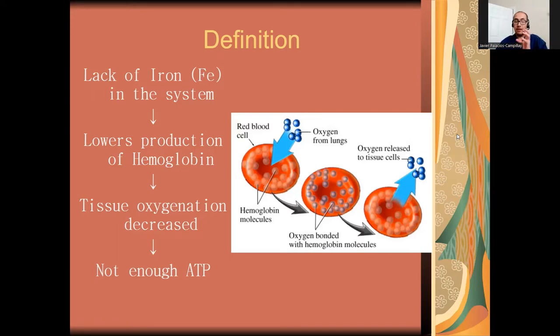Hemoglobin is a very essential component in iron deficiency anemia, and without iron, hemoglobin is going to be affected.